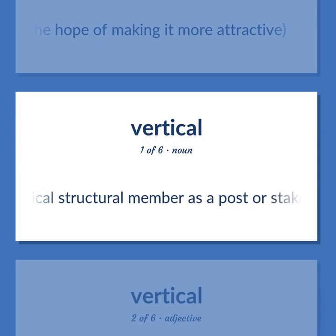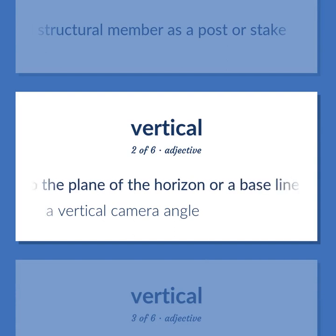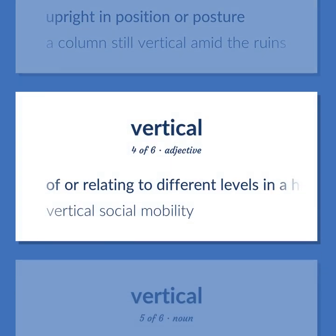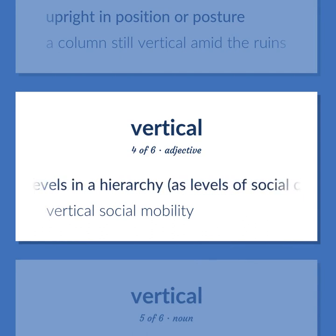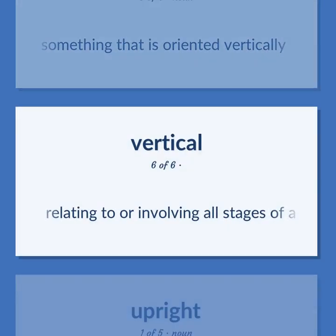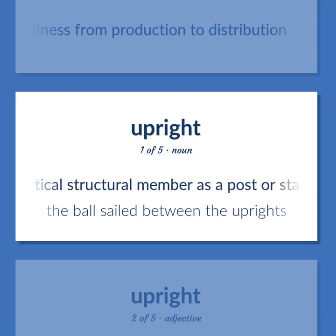Vertical/Upright: A vertical structural member, as a post or stake. At right angles to the plane of the horizon or a baseline — a vertical camera angle. Upright in position or posture — a column still vertical amid the ruins. Of or relating to different levels in a hierarchy, as levels of social class or income group — vertical social mobility. Something that is oriented vertically. Relating to or involving all stages of a business from production to distribution. The ball sailed between the uprights.